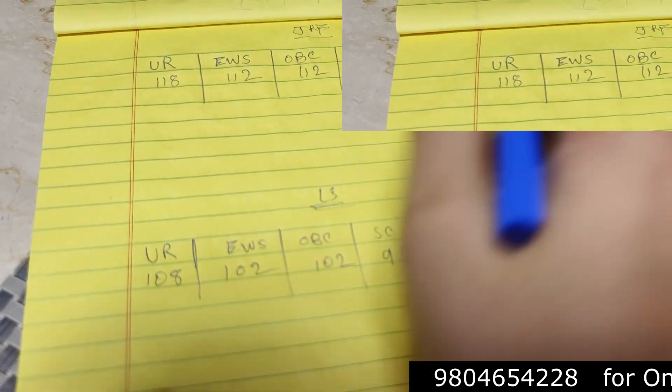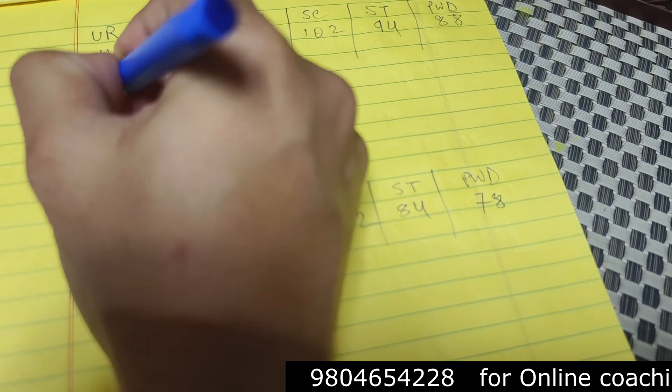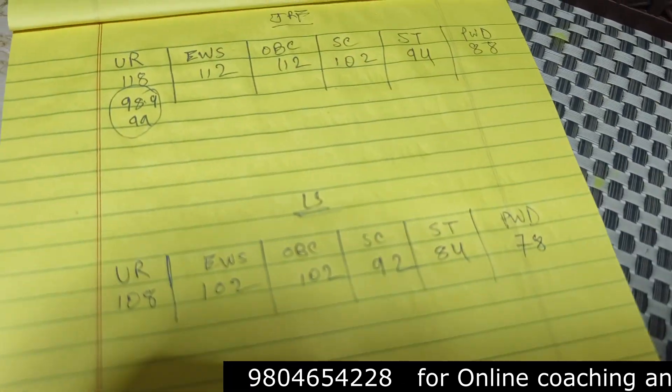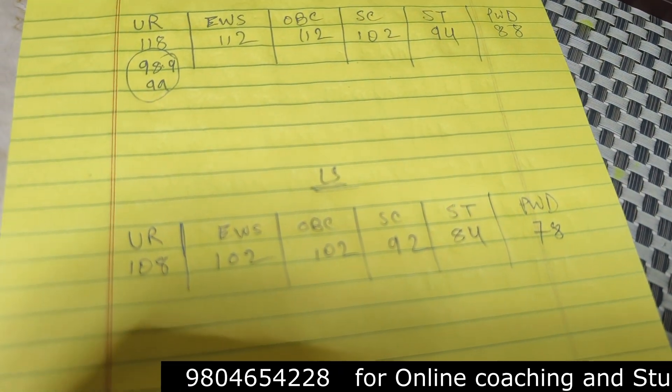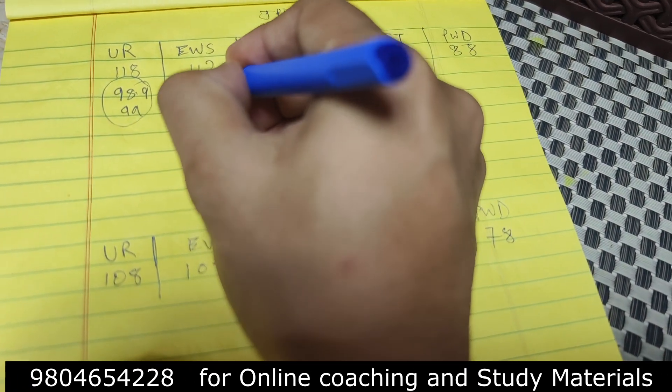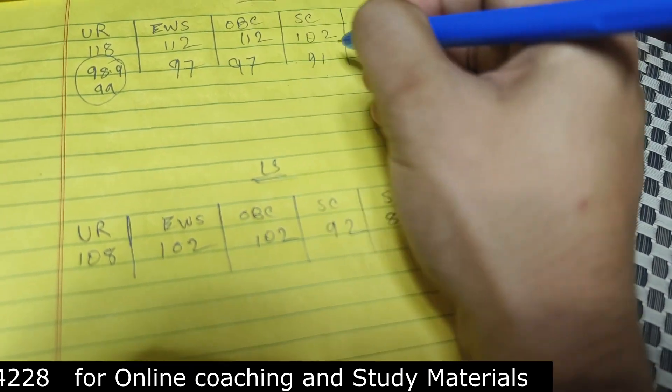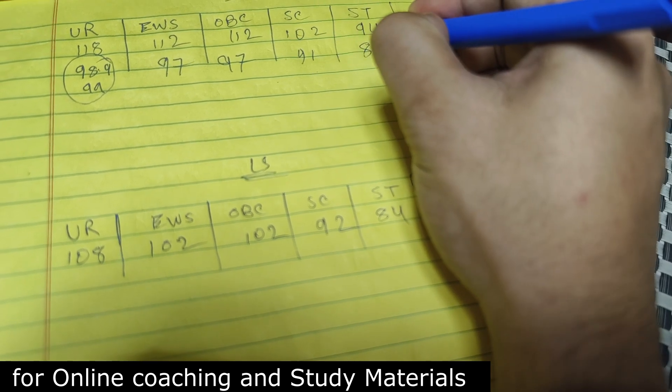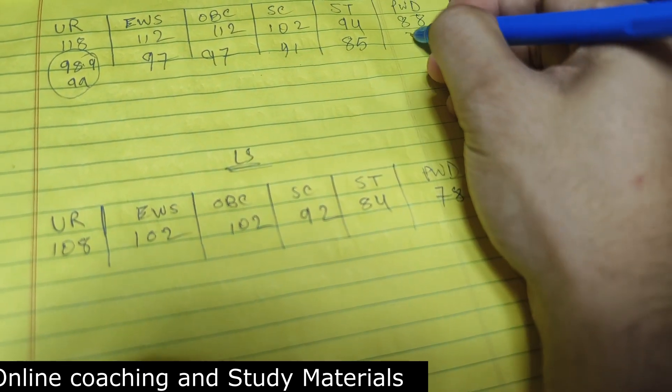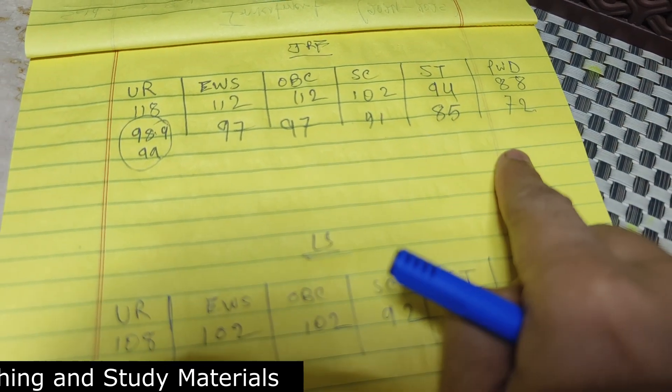So what will be the percentile for unreserved category? I'll put it 98.9 to 99 percentile for general category JRF LS. For EWS it is 97 percentile, OBC 97 percentile, SC 91 percentile, ST 85 percentile and PWD 72 percentile.